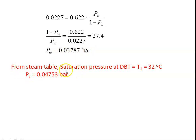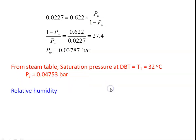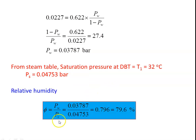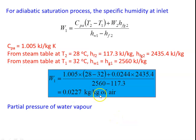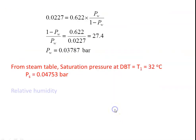From the steam table, the saturation pressure at dry bulb temperature T1 = 32°C is PS = 0.0453 bar. The partial pressure of water vapor is 0.03787 bar and the saturation pressure is 0.0453 bar. Relative humidity φ = PW / PS = 0.03787 / 0.0453 = 0.796 = 79.6%. So the relative humidity is 79.6% and specific humidity is 0.0227 kg per kg of air. That is the answer for this problem.